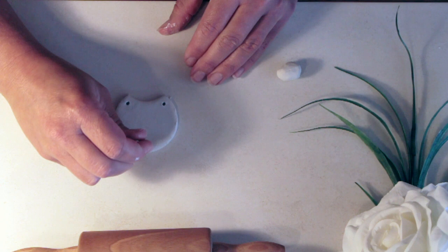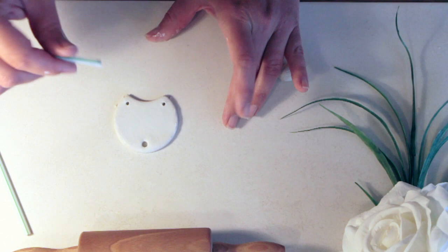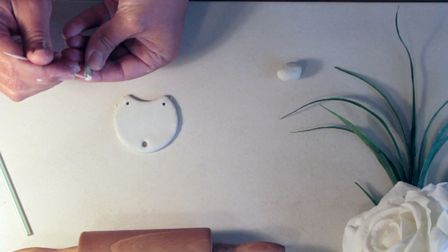Another good thing to make a hole with is a straw, so cut off a small section, insert it all the way into the board there, give it a nice twist and pull up and there we go, you've got a lovely clean hole. And then we can remove the excess there with a cocktail stick.